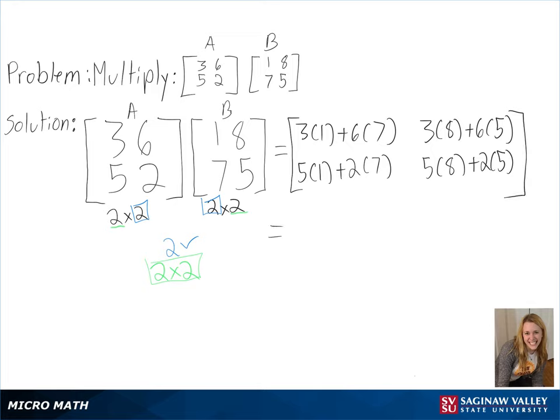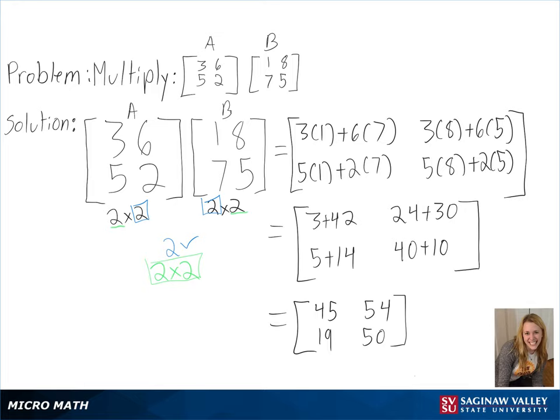Since all of our rows and columns have been multiplied, we can start simplifying. We will begin with multiplying, and then we can add our numbers. And with that, we have solved matrix AB.